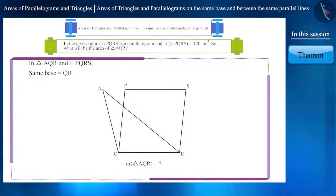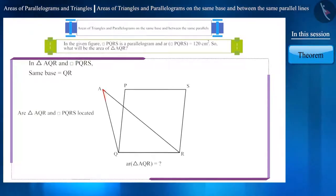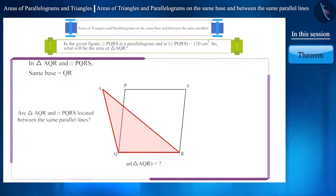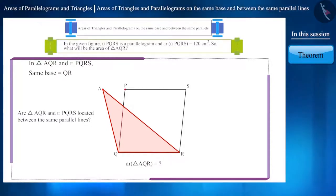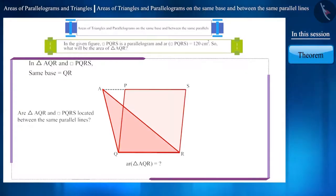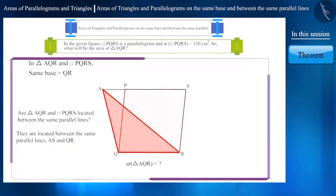Can you tell anything more about the figure? Are these shapes located between the same parallel lines? If we join point A and point P, then we can see that these two shapes are located between the same parallel lines AS and QR.